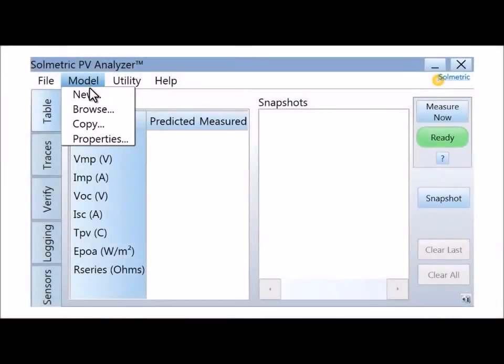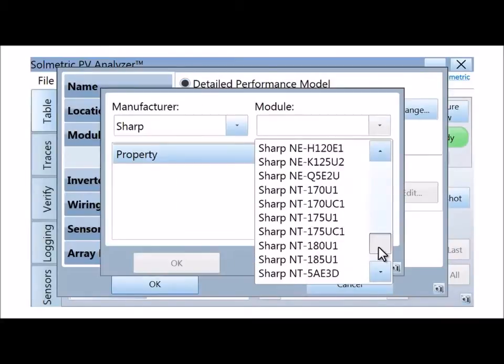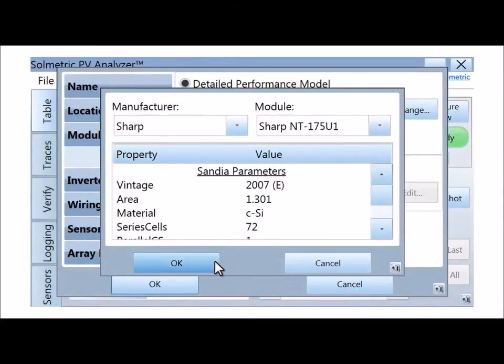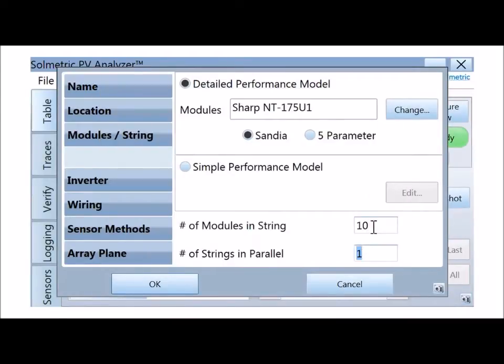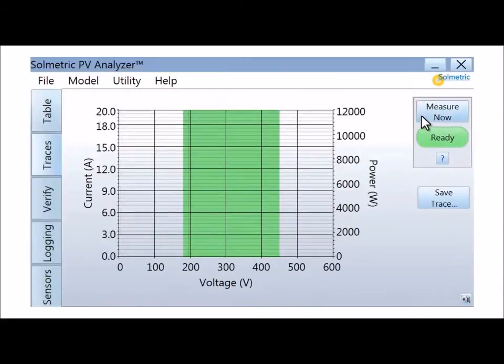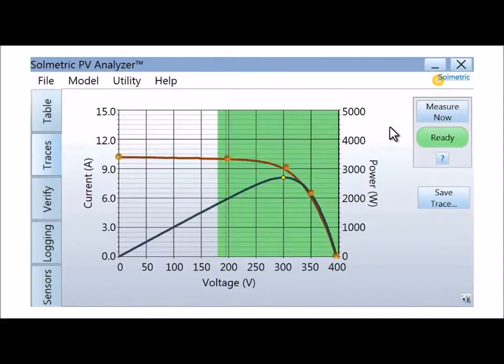The performance model is set up in preparation for measurements. It involves selecting the PV module model from an onboard database and entering the number of modules in series and in parallel. Using advanced performance models, the PV Analyzer software will generate accurate model points against which actual IV measurements can be compared.